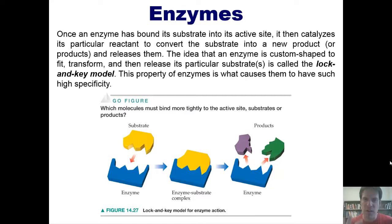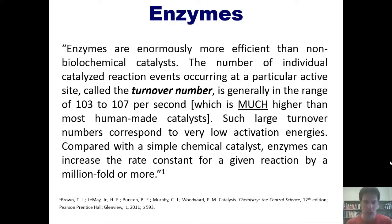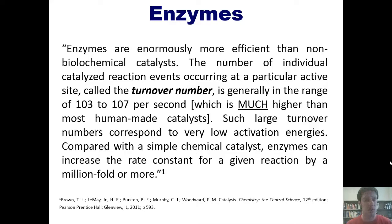I'd now like to take a very cool quote directly from our text. It says: enzymes are enormously more efficient than non-biochemical catalysts. The number of individual catalyzed reaction events occurring at a particular active site, called its turnover number, is generally in the range of 10³ to 10⁷ per second, which is much, much higher than most human-made catalysts. Such large turnover numbers correspond to very low activation energies. When compared with a simple chemical catalyst, enzymes can increase the rate constant for a given reaction by a million-fold or more.